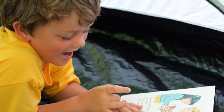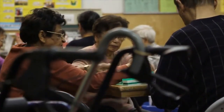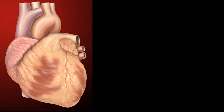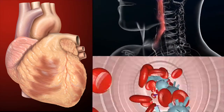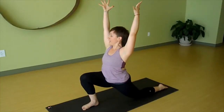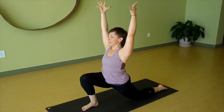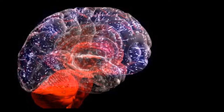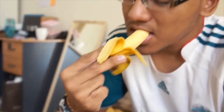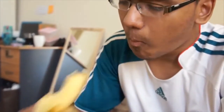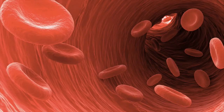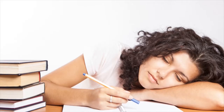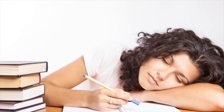Keeping physically active can keep our heart, lungs, and blood vessels healthy. This also ensures that all parts of the body, including the brain cells, get the oxygen and nutrients they need. If blood supply is impaired to the brain, it will not function as well.